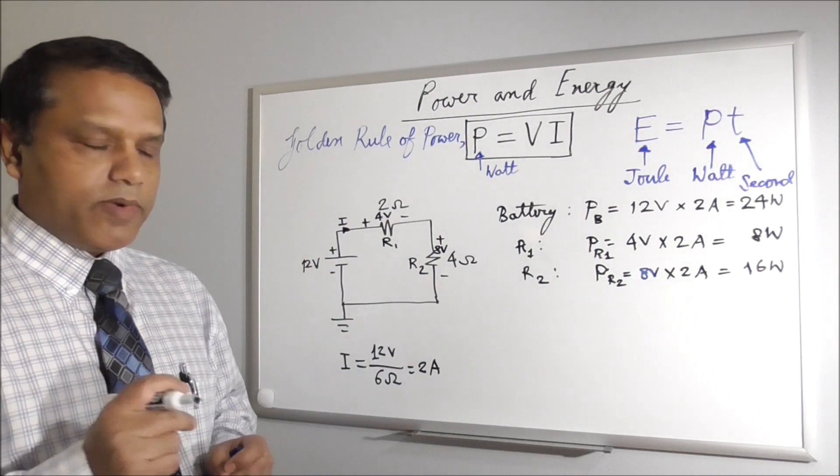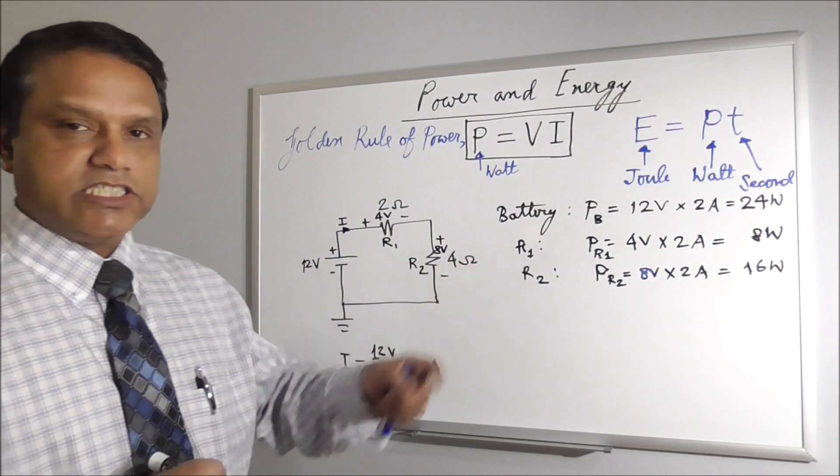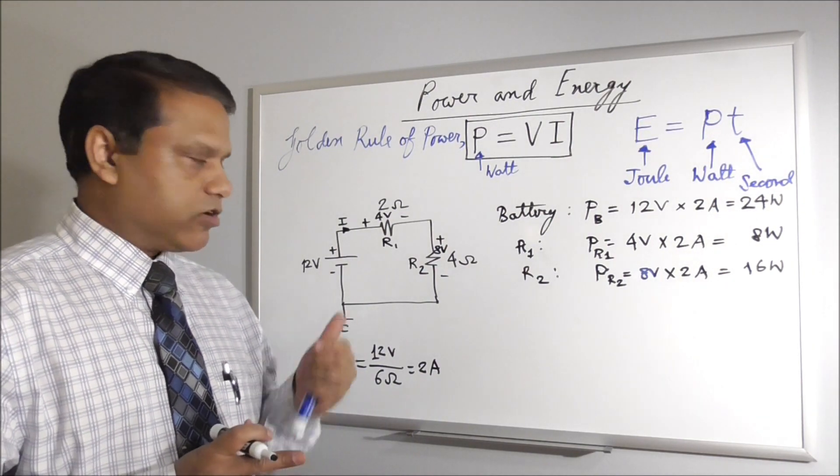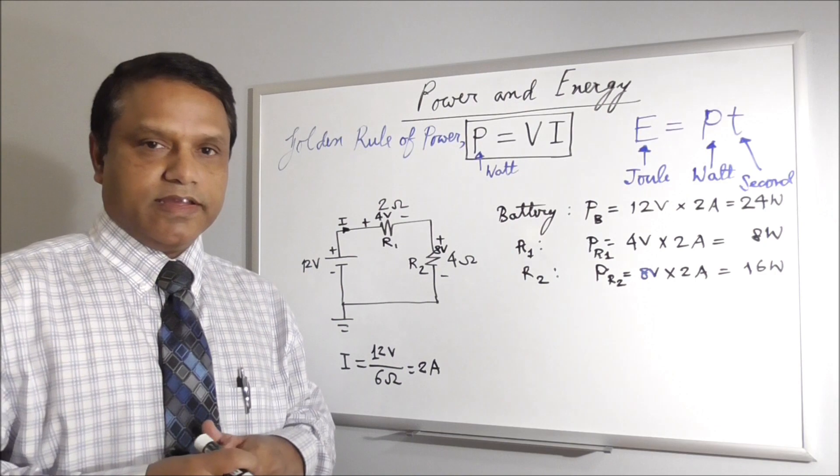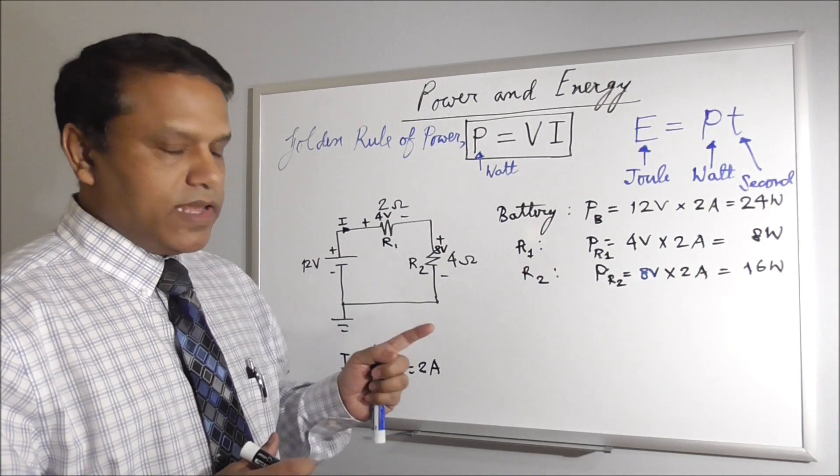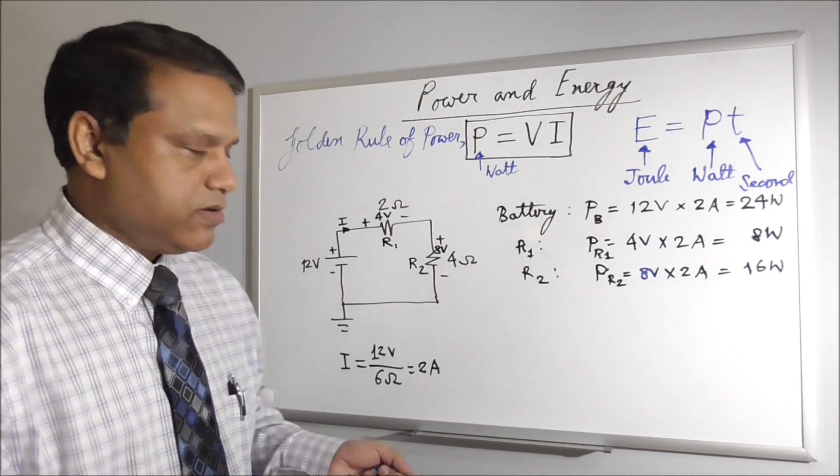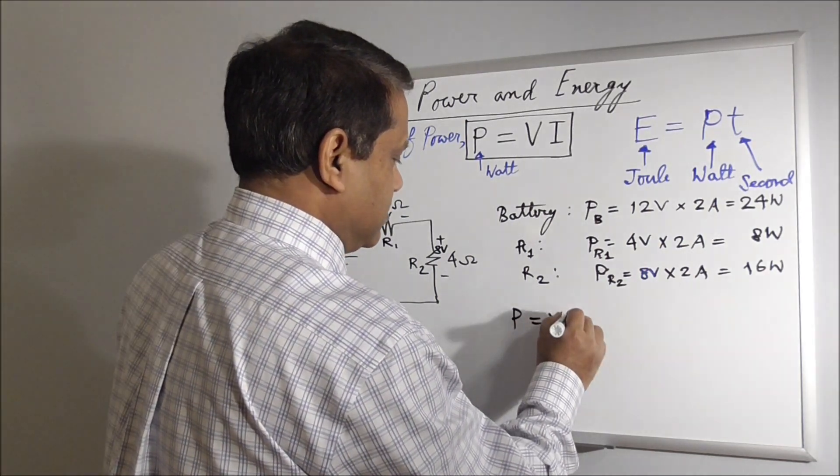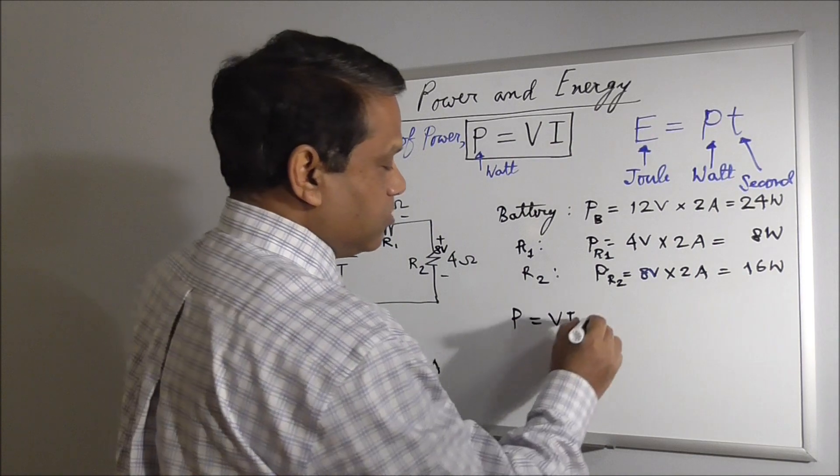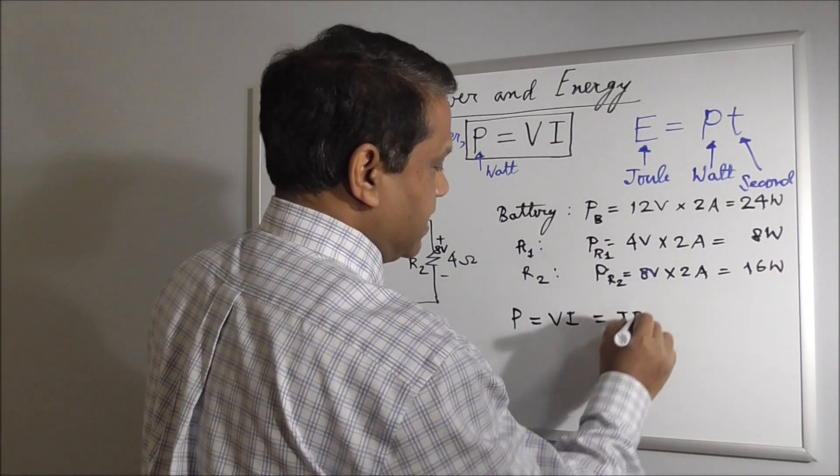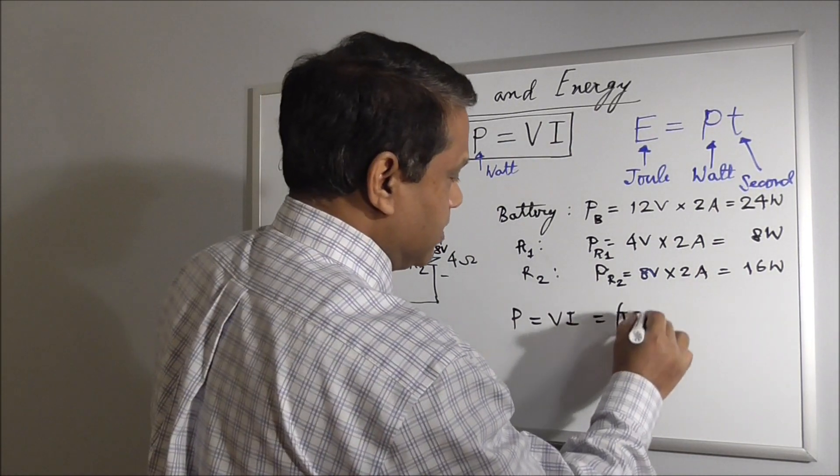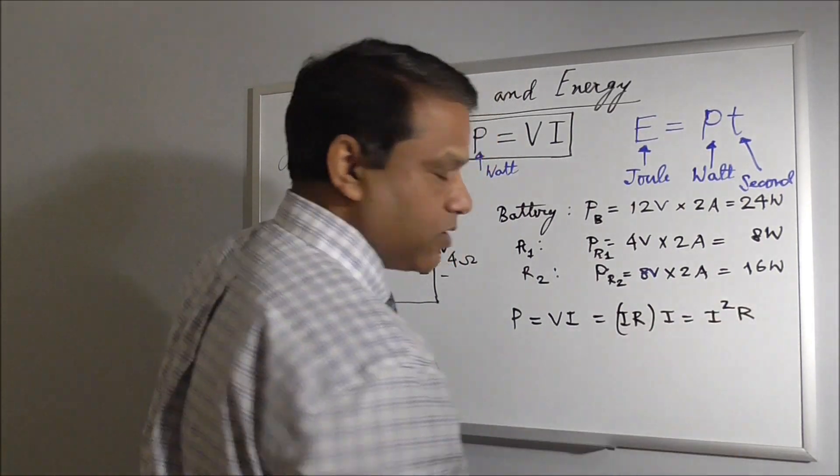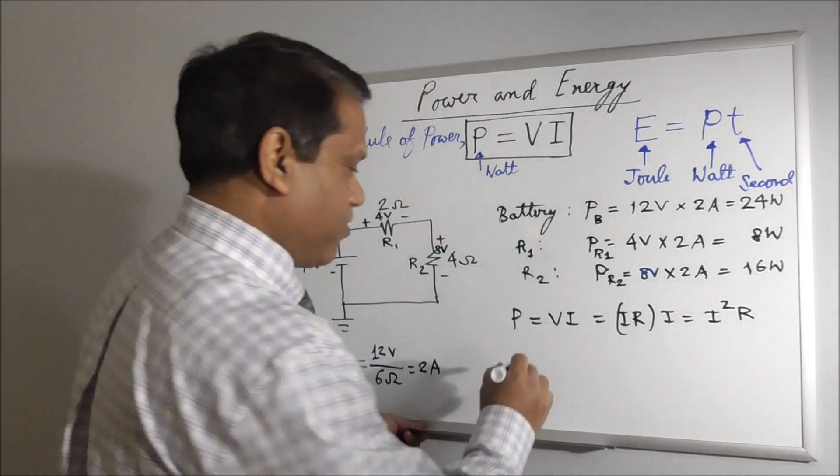There are a couple of other forms of power equation for resistors only. They don't apply to any other things, not voltage source, not a transistor or any other thing. Only applies to resistor. The other form is power equals VI, and for resistor V equals IR according to Ohm's law, times I, so we get I squared R.